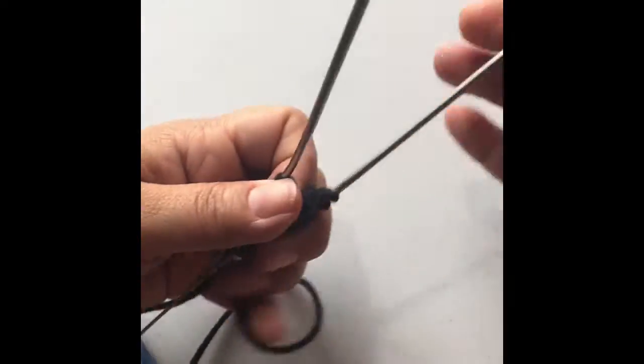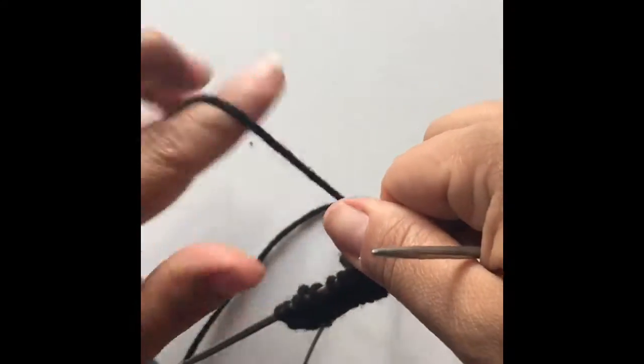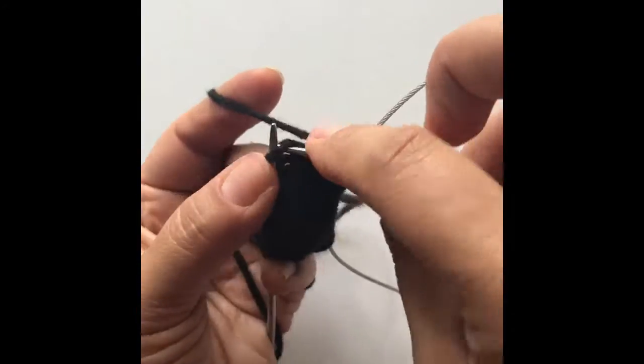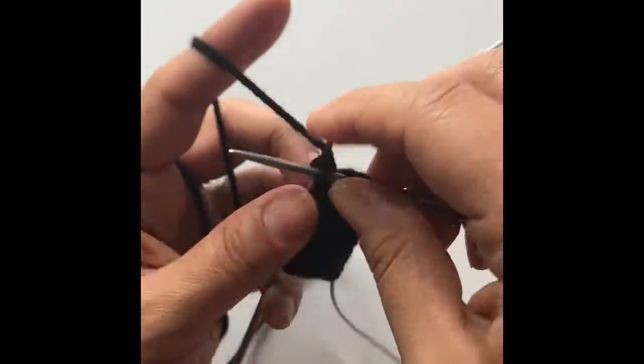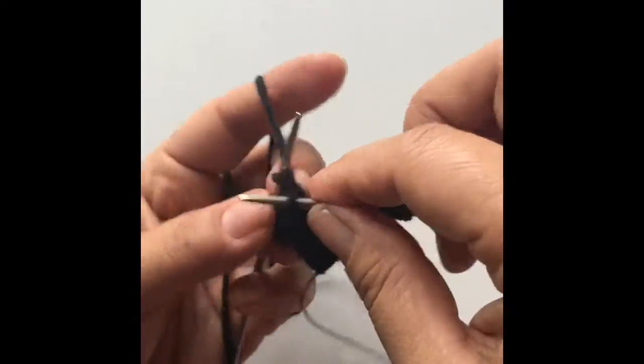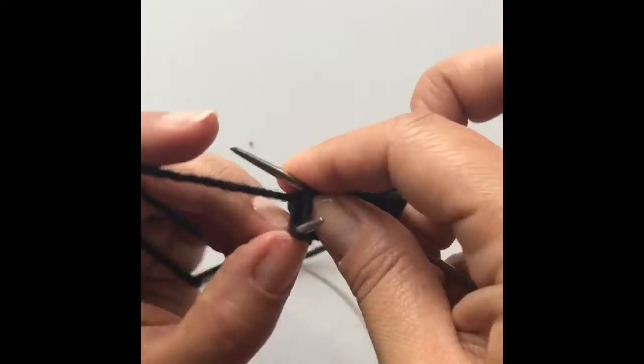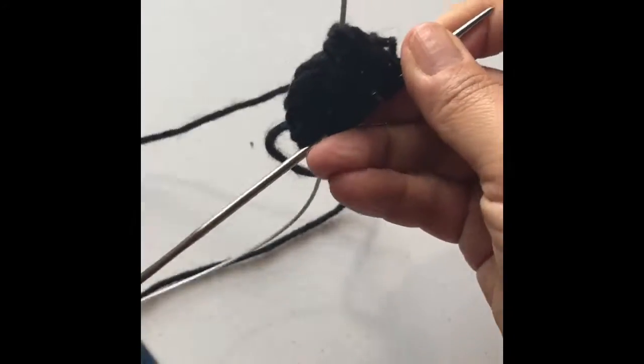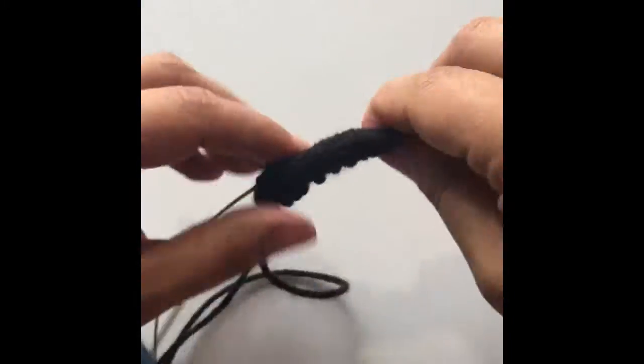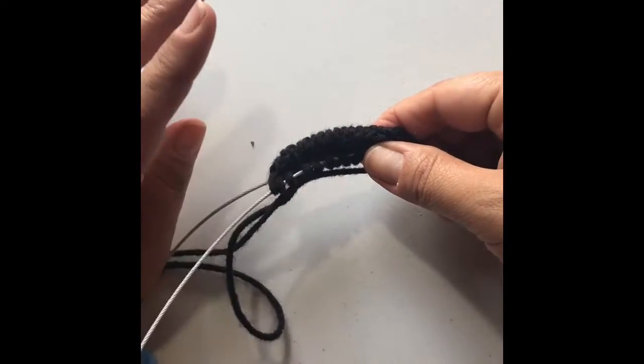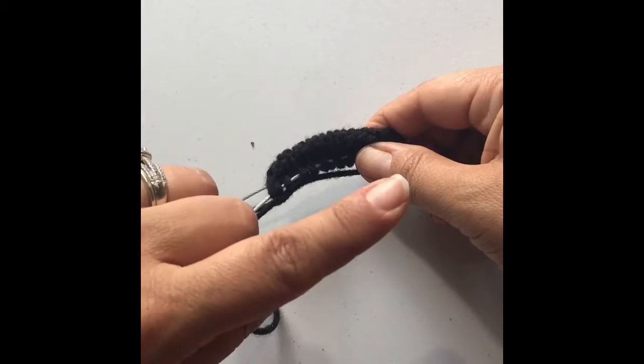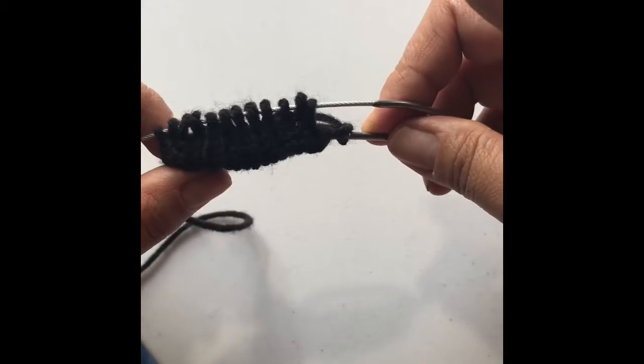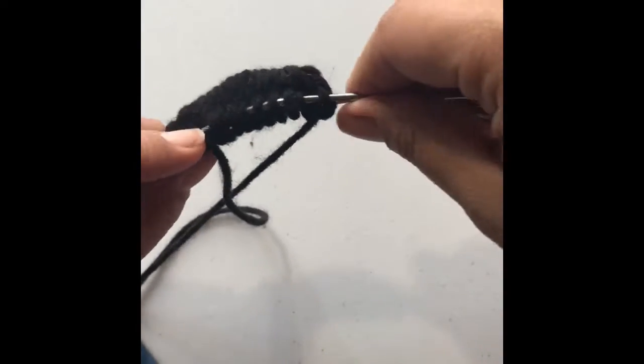Then we will rotate and do that increase sequence again, knitting into the front and the back of that first stitch. Front and back. Knit all the way across until the second to the last stitch. That really is how we're going to do our toe. We're going to do alternating rounds of knitting straight and increasing on either side of the toes. And we want to make sure when we increase that we increase on both the beginning and the end of this side and the beginning and the end of the other side. We want them to be even.